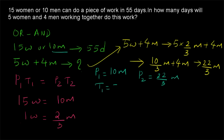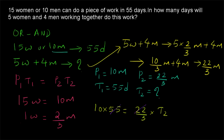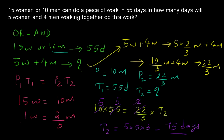T1 = 55 days and T2 is what we need. Substituting: 10 × 55 = (22/3) × T2. Cancelling: 2 with 10 gives 5, and 5 with 5 gives 1. So T2 = 5 × 5 × 3 = 75 days. The key is to convert the mixed group to the same units before substituting into the formula.